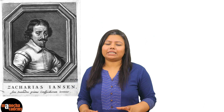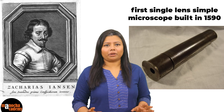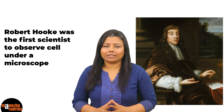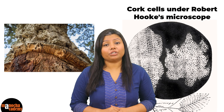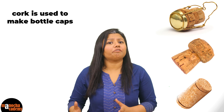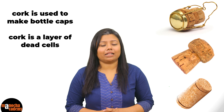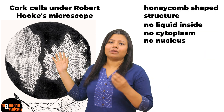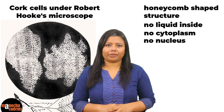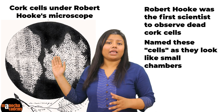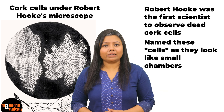Zacharias Janssen in 1590 prepared the first simple microscope, which consisted of one lens. In 1665, Robert Hooke was the first scientist to observe a cell under a microscope. He made thin slices of cork — a layer present under the bark of a tree — and observed it under the microscope. Cork is a layer of dead cells. The cells Robert Hooke observed looked like honeycombs — empty, without any cytoplasm or nucleus. He was the first to observe these dead cells in a slice of cork and he named them cells, which means small chambers.